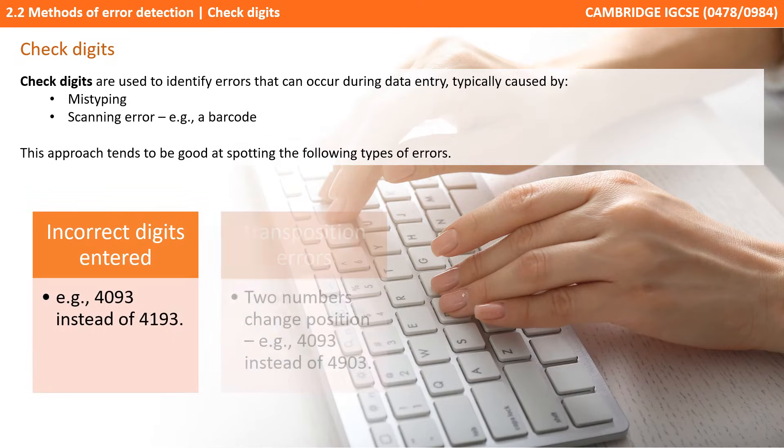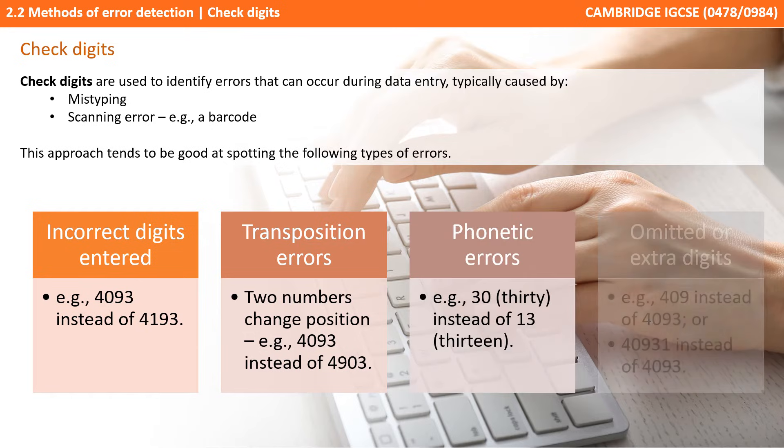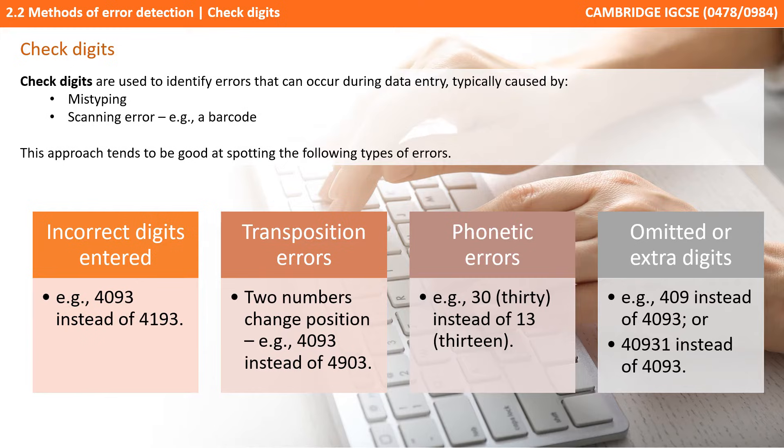Check digits are used to identify errors which occur during data entry. These can be caused by mistyping or miss scanning a barcode. This approach is good at spotting various errors, for example incorrect digits entered, transposition errors where two digits are accidentally swapped, phonetic errors like typing 30 when you meant 13, and omitted or extra digits.